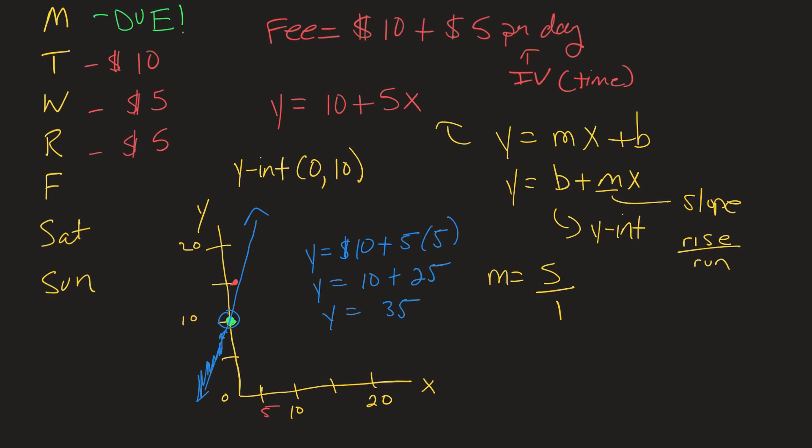So after five days, so right here, the cost would be 35, which would be like way up here somewhere, something like that. But it would be on that line. Every point is along that line somewhere. And that's what makes kind of linear equations and linear regression, what it is.